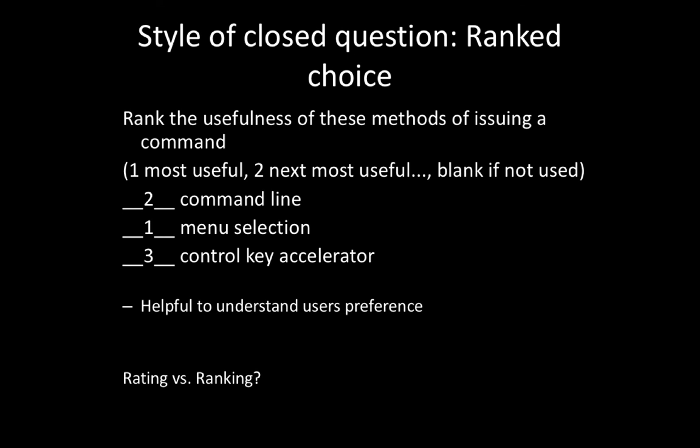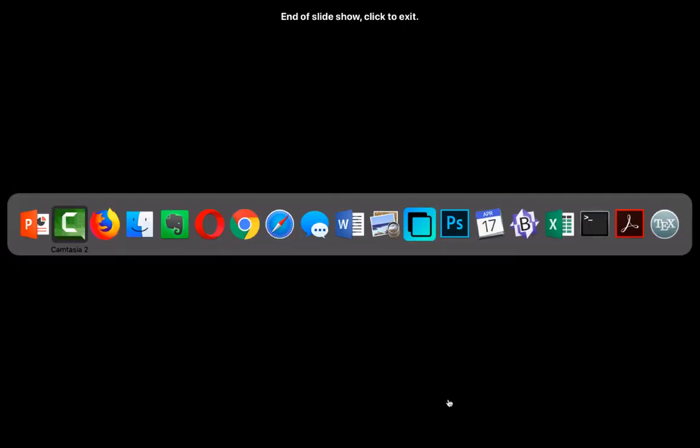Ranking is a little different than rating because it forces people to make a choice between things they might think are equivalent. But it can be useful — if something consistently comes out at the bottom, or you get a common ranking pattern from your subjects, that can help you make usability decisions.